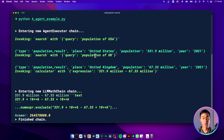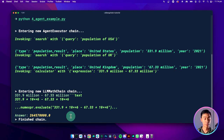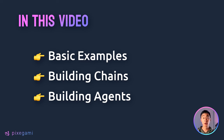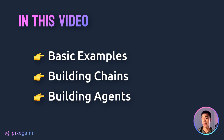For example, here's an agent that knows how to search Google for the population of two countries and then do some basic math calculation with them. In this video, we're going to look at some basic examples of how to use Langchain. This includes how to structure your output, how to create a sequence of LLM commands, and how to build an LLM agent that can look up information from the internet.